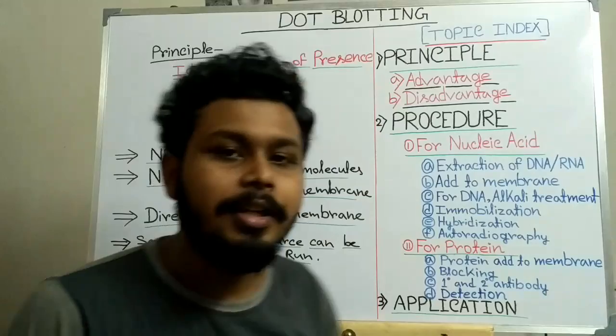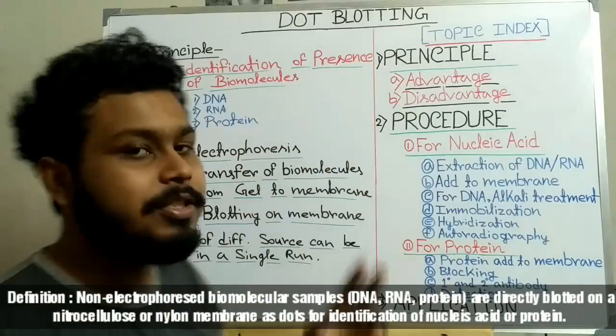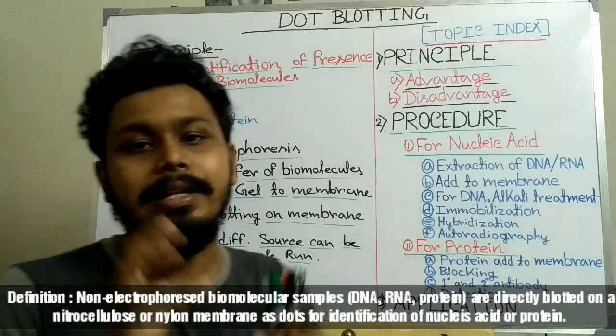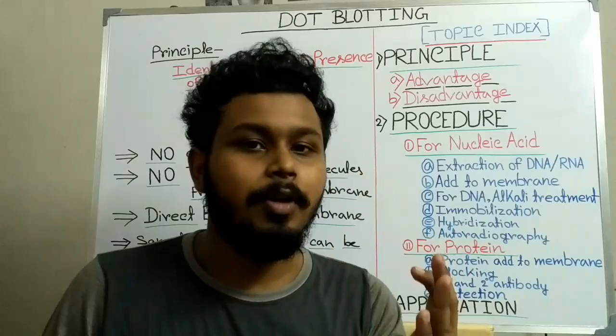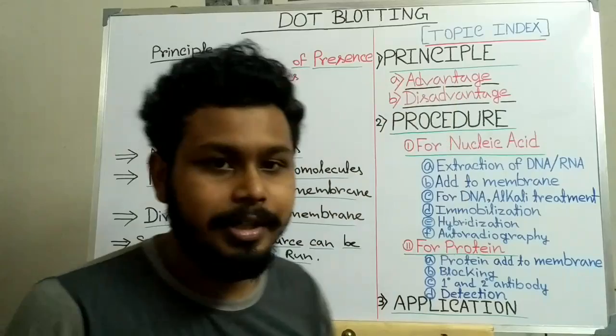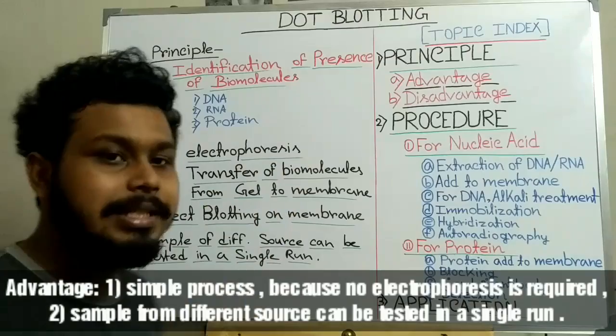Today I am going to discuss dot blotting. Dot blotting technique is used for the identification of presence or absence of biomolecules like DNA, RNA, or protein in a tissue, cell, or sample. This dot blotting technique is a simplified form of Southern blot, Northern blot, or Western blot, and its simplicity is its advantage.